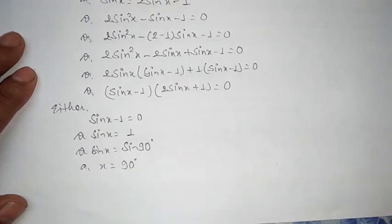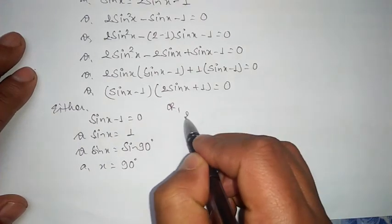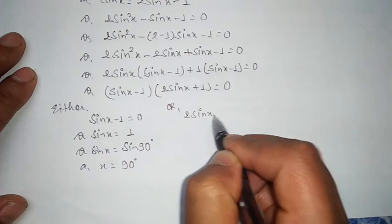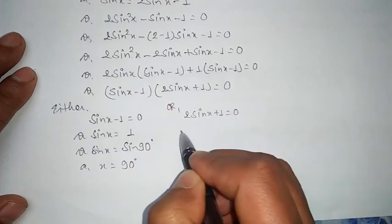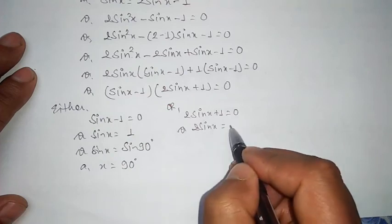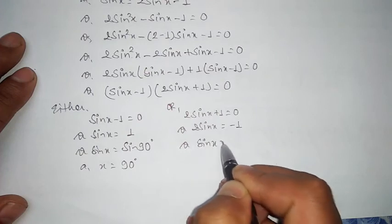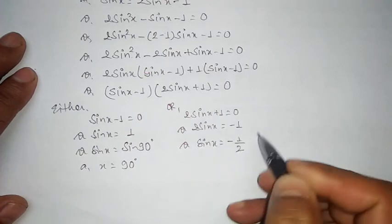The second one is 2 sin x plus 1 equals 0, or 2 sin x equals minus 1, or sin x equals minus 1 upon 2.